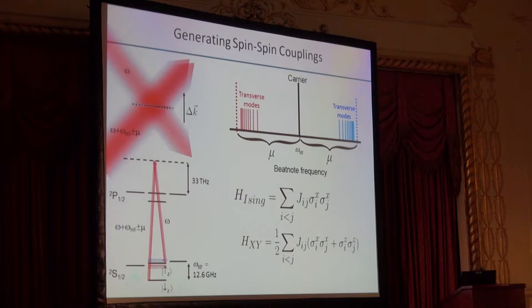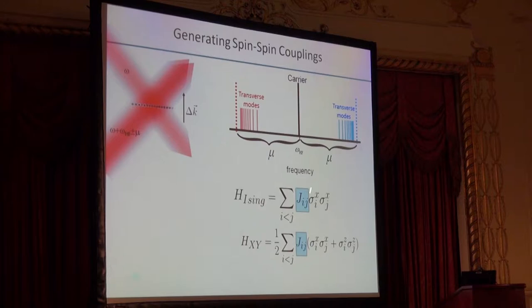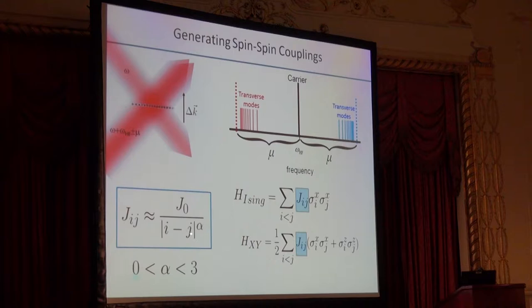Recently we've also devised a way to realize a dynamic version of an XY type Hamiltonian and let the system evolve under this type of model. It's important to point out that these Jij spin-spin couplings have a particular structure, namely that they fall off with some sort of a power law decay in distance between the two ions. Just by changing the laser frequency of these symmetric beat notes, we can tune what this power law decay is in an ion trap from 1/r^0, an all-to-all coupling, to 1/r^3, which is a dipole-like approximation.